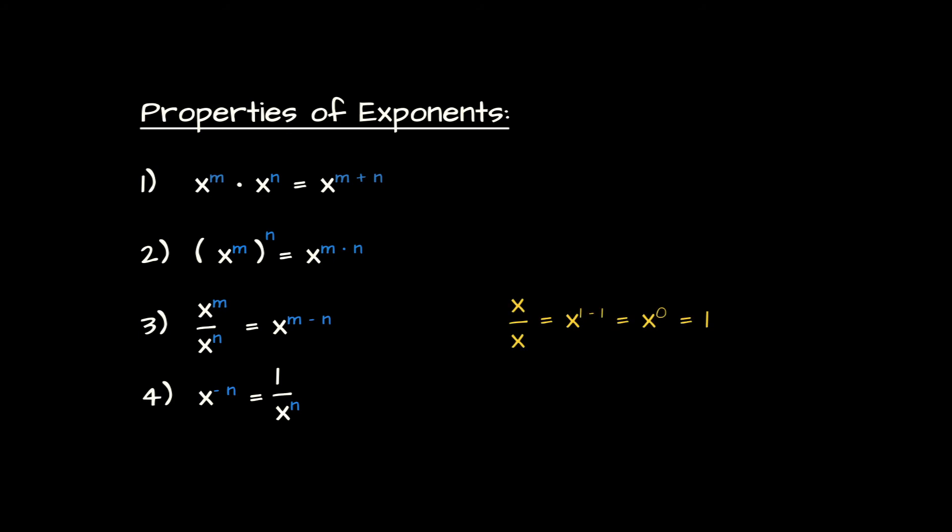A special case worth pointing out is when m and n are both equal to 1: x over x would be, by our property, x to the 0, and x over x — as long as x is not 0 — always equals 1. Therefore, any number raised to the power 0, unless that number is 0, will always equal 1.